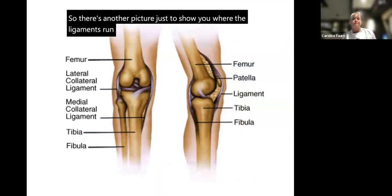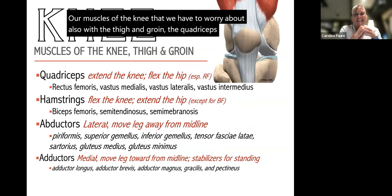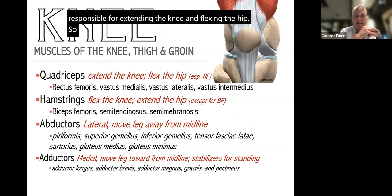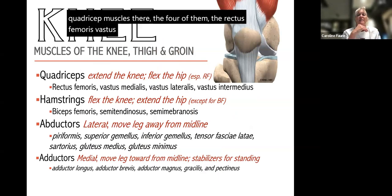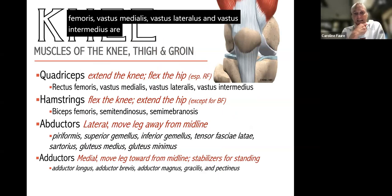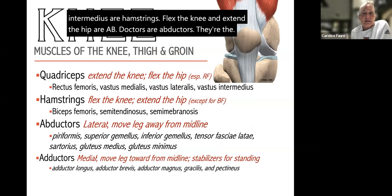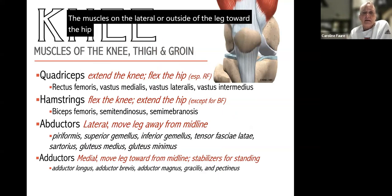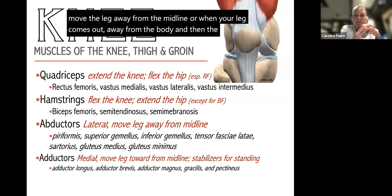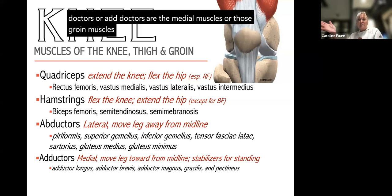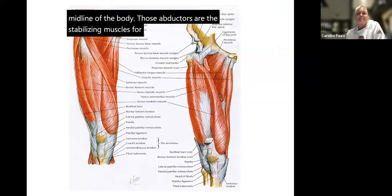The muscles of the knee include the quadriceps, which are responsible for extending the knee and flexing the hip — the four muscles being the rectus femoris, vastus medialis, vastus lateralis, and vastus intermedius. The hamstrings flex the knee and extend the hip. The abductors are the lateral muscles that move the leg away from the midline, while the adductors are the medial groin muscles that move the leg toward the midline and serve as stabilizing muscles for standing.